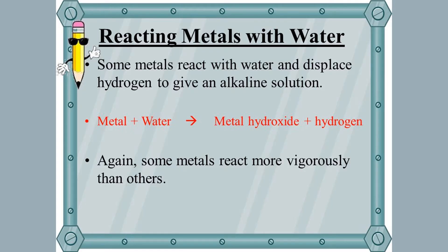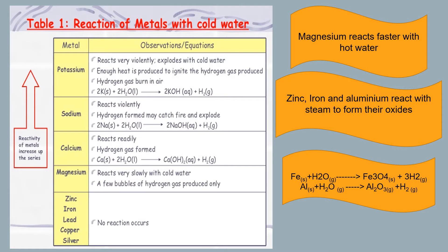Next is the reaction of metals with water. When metals react with water, they form metal hydroxide and hydrogen gas is evolved. Potassium and sodium react violently with water — the hydrogen evolved immediately catches flame because the reaction is highly exothermic. Calcium reacts readily with water; the reaction is fast and forms calcium hydroxide and hydrogen gas. The hydrogen gas evolved surrounds calcium metal, causing it to float while reacting with water.